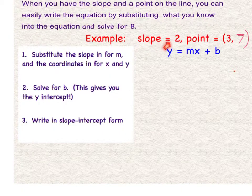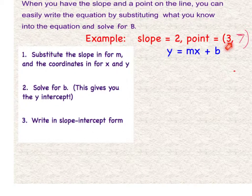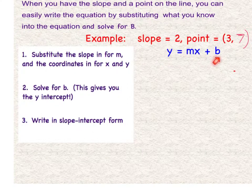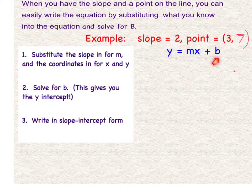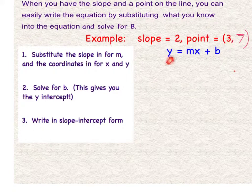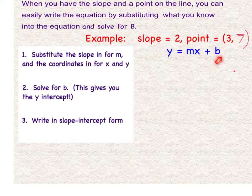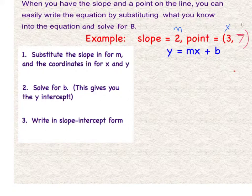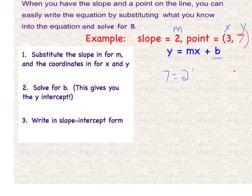In our next example, we're given a slope and a point. Remember, you need the slope and the y-intercept to write the equation in slope-intercept form. There are a couple different ways that you can go about finding the y-intercept if you're given a slope and a point. I'm going to substitute in my slope for the slope, the x for the x, the y for the y, and solve for b.